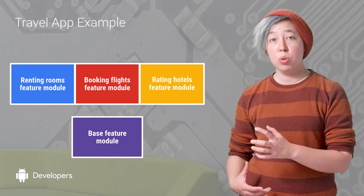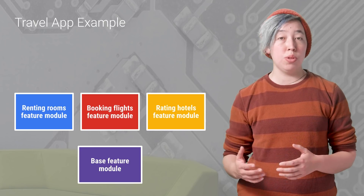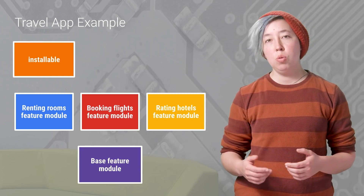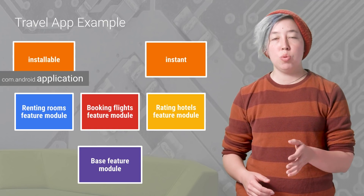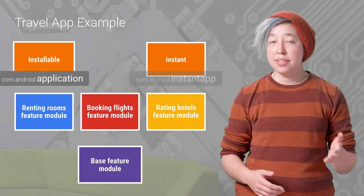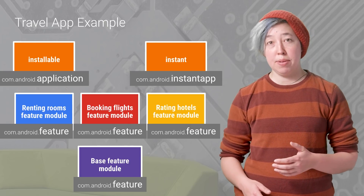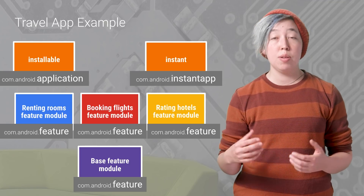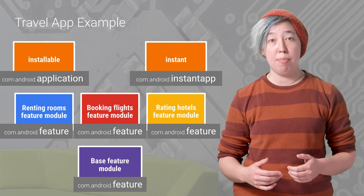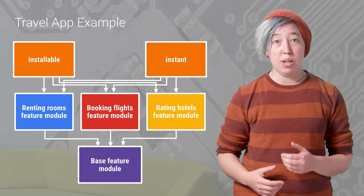So as we saw before, you have modules for all of your features and the base feature module. You're also going to include two additional modules just for building the app: the installable app module, which builds your installable app, and the instant app module, which builds your instant app. The installable app module uses the Gradle application plugin, but the instant app module uses the new Gradle instant app plugin. Your feature modules then use the new feature plugin. The feature plugin is kind of cool because it will make either an APK or a library, depending on whether it's being built by the instant app or the installable app module. After using the correct Gradle plugins for each of your build files, you just have to set up the dependencies between the modules, and then you're ready to build both instant and installable apps.